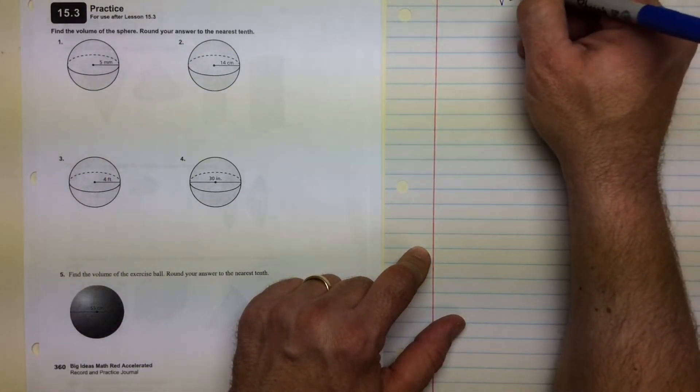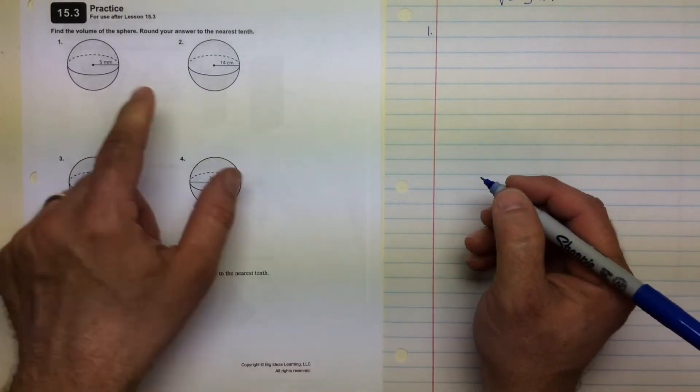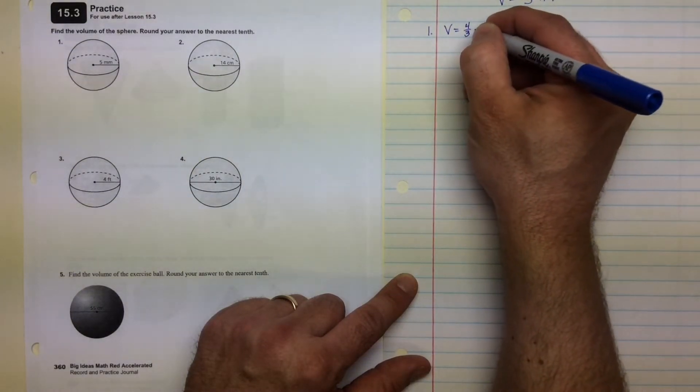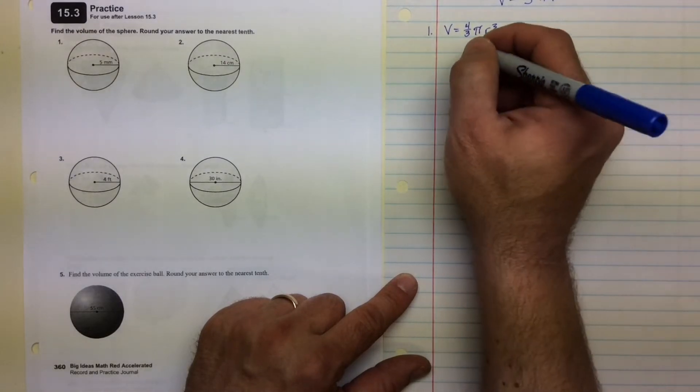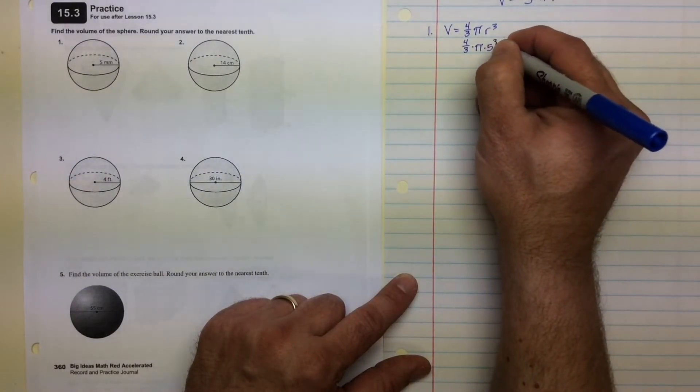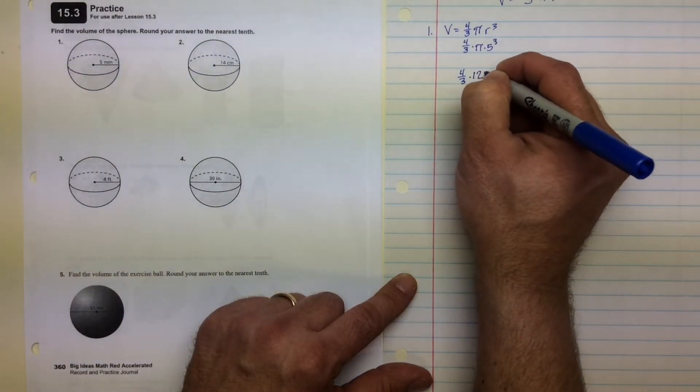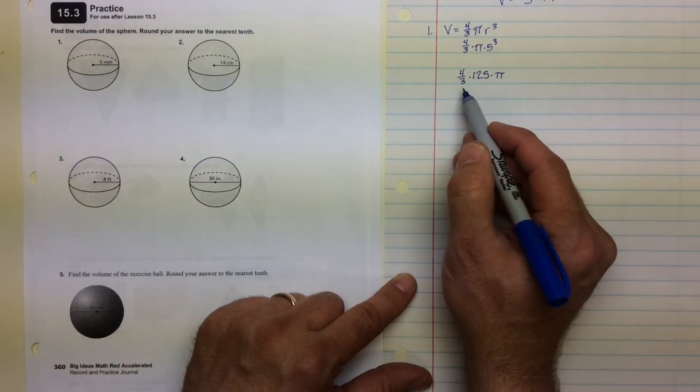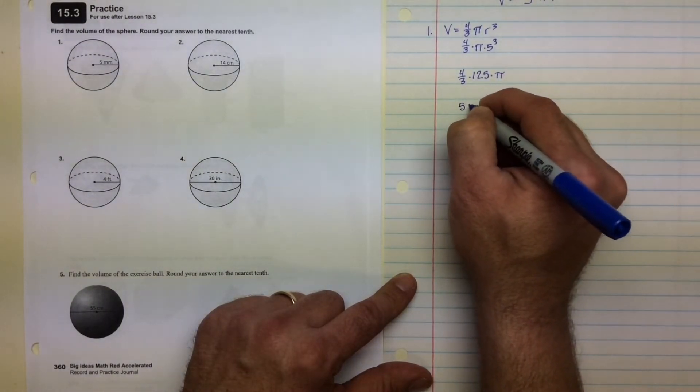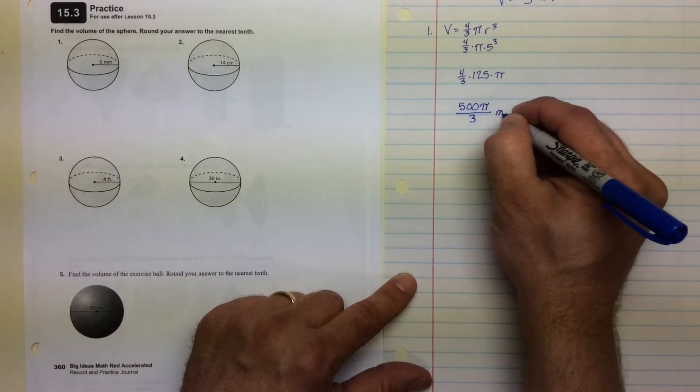Volume of a sphere equals four-thirds pi r cubed. For number 1, it gives us the radius, so we write down the formula, four-thirds pi r cubed. We can put in 5 for the radius. We know 5 cubed is 125, so now I've got four-thirds times 125 times pi. 125 is not divisible by 3, but I can multiply it by 4, which will give me 500. So I'm going to end up with 500 pi over 3. The units are millimeters cubed.